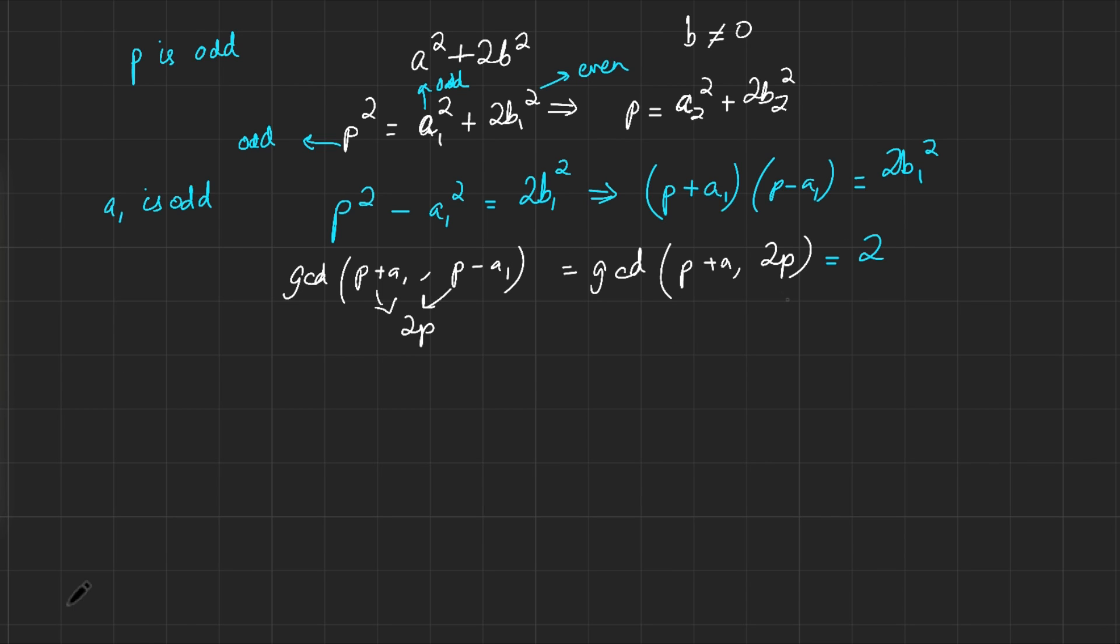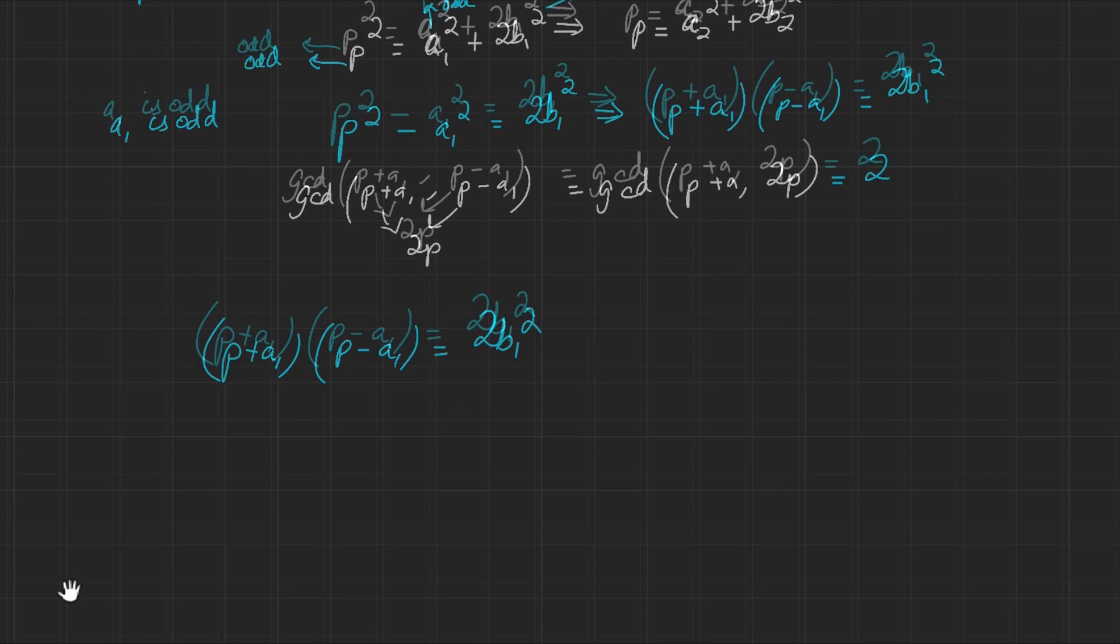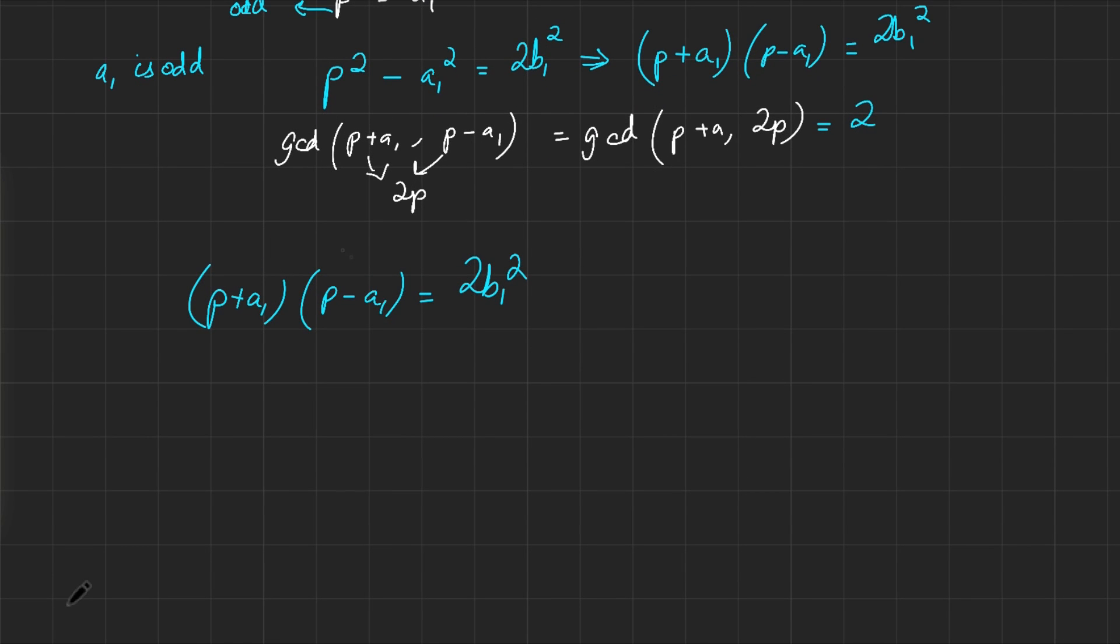What can we do with this information? We know that I've got p plus a1 times p minus a1 equals 2b1 squared. I know that the greatest common denominator of these is 2. So there's a factor of 2 here and nothing greater than 2, and there's a factor of 2 here and nothing greater than 2 that they share. How would two numbers multiply to give me 2b1 squared? I could have k squared times 2n squared. That's one example, because that would give me 2nk whole squared, and I think that's the most general form.